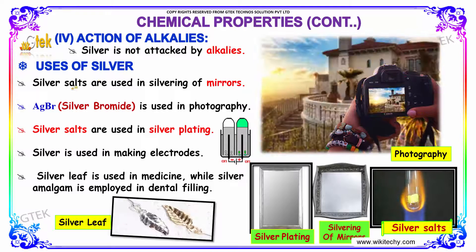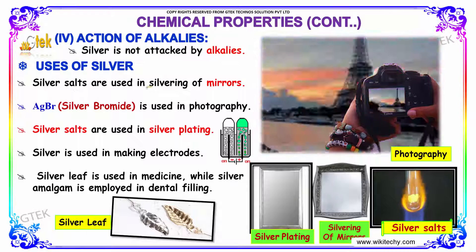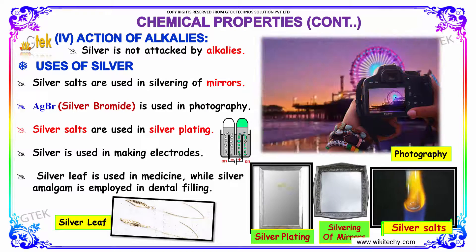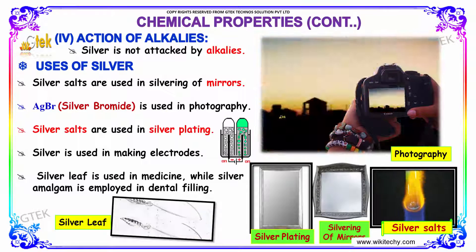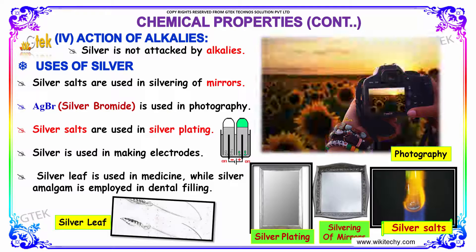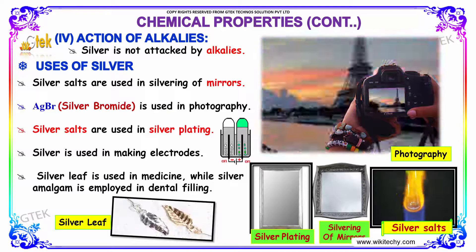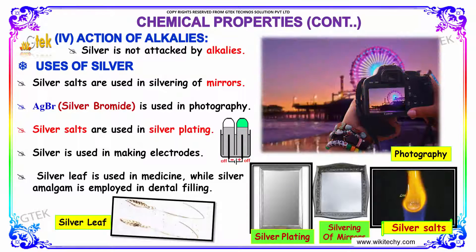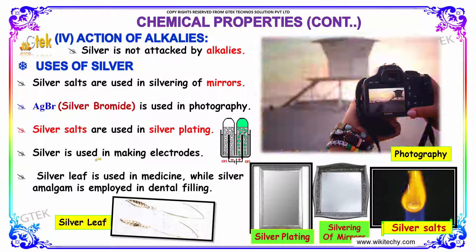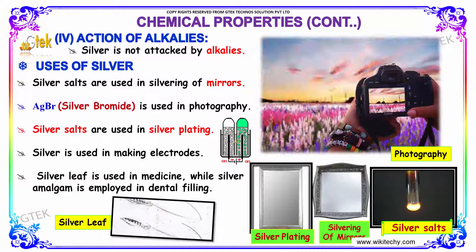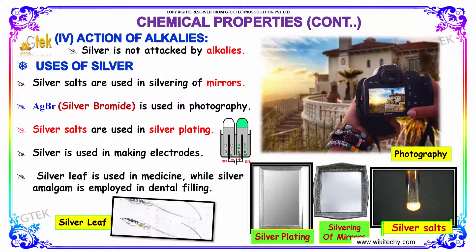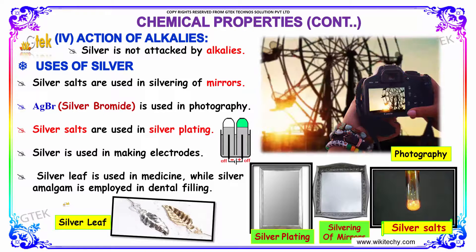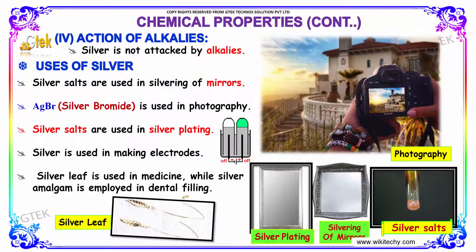Uses of silver: Silver salts are used in the silvering of mirrors. Silver bromide, AgBr, is used in photography. Silver salts are also used in silver plating. Silver is used in making electrodes. Silver leaf is used in medicine, while silver amalgam is employed in dental filling.